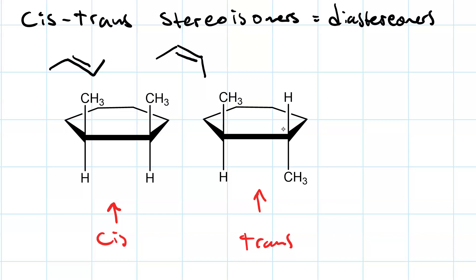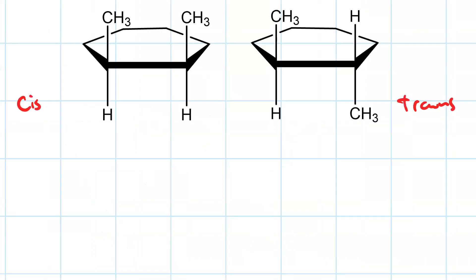But, each molecule also contains two chirality centers. Then it's useful to draw them as wedge dash structures.